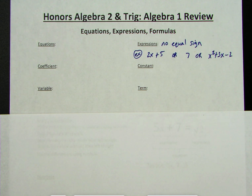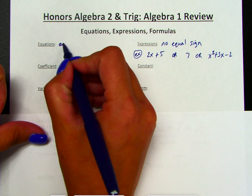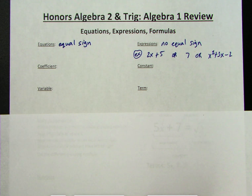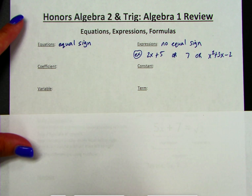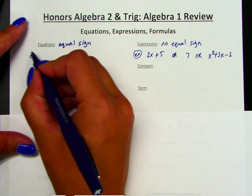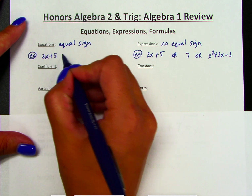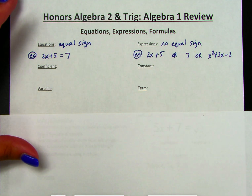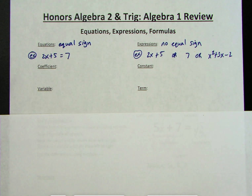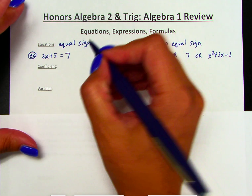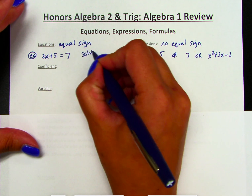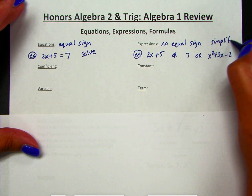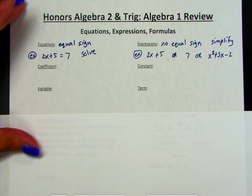When we're talking about an equation, this is going to have an equal sign. It's when we set expressions equal to each other that we get an equation. So for example, if I have 2x plus 5 and I set it equal to 7, I now have an equation. For equations, this is something that we solve, and for expressions, we simplify. We'll talk more about the difference between those two words in a second.